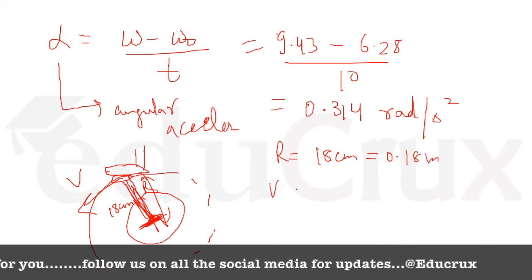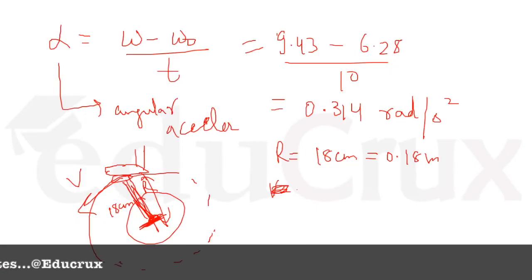Now V is equal to, we don't have to find V. We need to find angular acceleration. This is the velocity and this is also the direction of tangential acceleration, right?